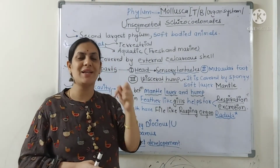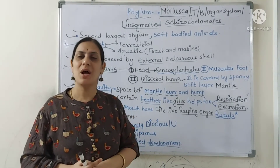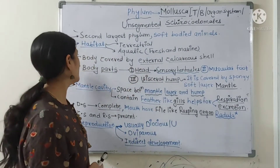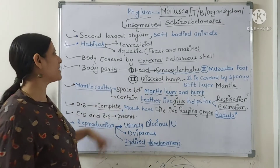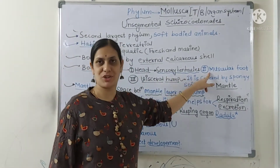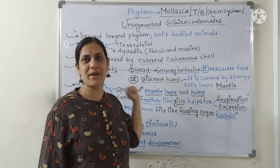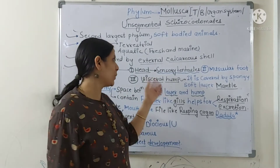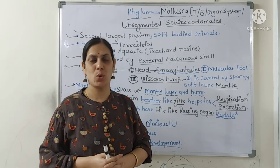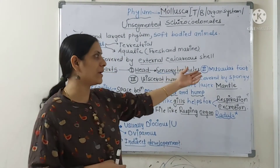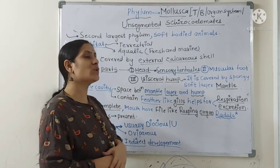As seen in the snail, the body is covered by a calcareous shell — made up of calcium carbonate — an external shell. Their body is divided into three main parts: the first is the head, the second is the muscular foot, and the third is the visceral hump. The head of the snail has two tentacles which are sensory structures. The muscular foot helps for locomotion.